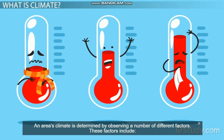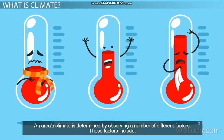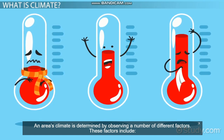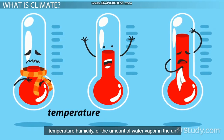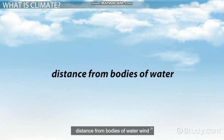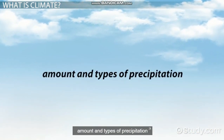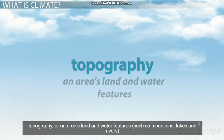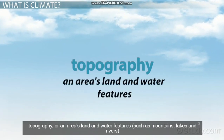An area's climate is determined by observing a number of different factors. These factors include temperature, humidity or the amount of water vapor in the air, distance from bodies of water, wind, and the amount and types of precipitation. Topography, or an area's land and water features such as mountains,